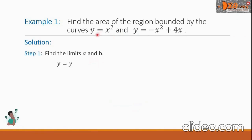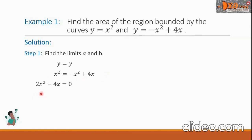We say that the y of the first equation is equal to the y of the second equation. Therefore, the right-hand side of the first equation is equal to the right-hand side of the second equation. So we write here x squared equals negative x squared plus 4x. Let us simplify this equation. Transposing the right-hand side to the left side and simplifying, we will get 2x squared minus 4x equals 0. Let us solve now for x. We can do factoring. The factors now are 2x times (x minus 2) equals 0.